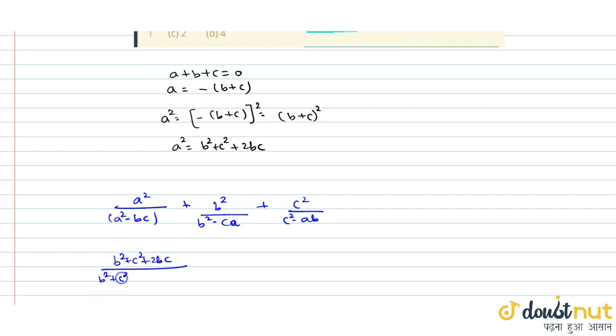Upon b square plus c square plus 2bc minus bc. Plus b square upon b square minus c into a value minus b minus c. Plus c square upon c square minus b into minus b minus c.